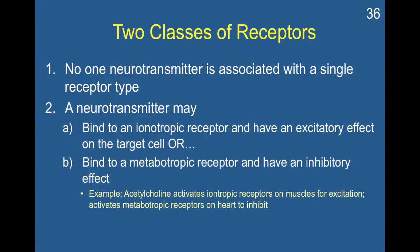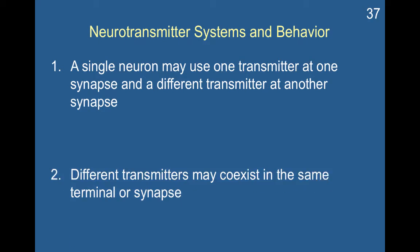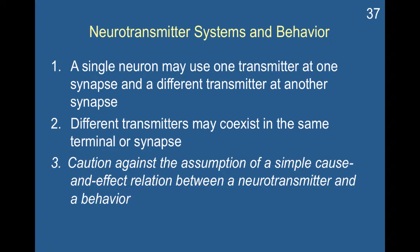For an example of this interplay, acetylcholine activates ionotropic receptors on muscles for excitation, but it activates metabotropic receptors on the heart to inhibit it and slow it down. Additionally, a single neuron can use one transmitter at one synapse and a different transmitter at a different synapse. Different transmitters may also coexist in the same terminal or synapse. All of this reminds us that we don't want to assume a simple cause-and-effect relationship between a neurotransmitter and behavior.